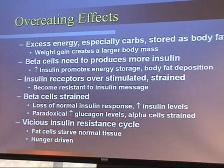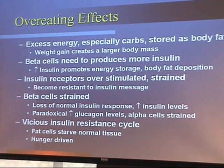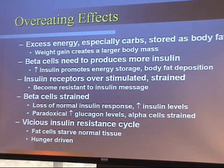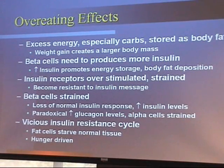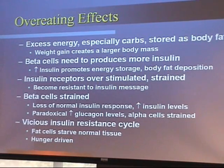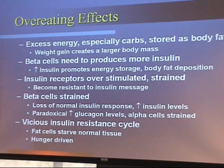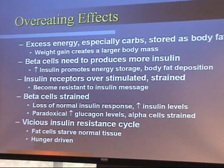When we start overeating, the excess energy — especially carbohydrates — is stored as body fat, and we begin to gain weight. This larger body mass tells the beta cells to produce more insulin, which creates more energy storage and more body fat deposition. Eventually, those insulin receptors become over-stimulated and resistant to the insulin message. The beta cells get strained, insulin levels get even higher, and we see a paradoxical increase in glucagon — normally if insulin goes up, glucagon goes down, but now glucagon starts to rise.